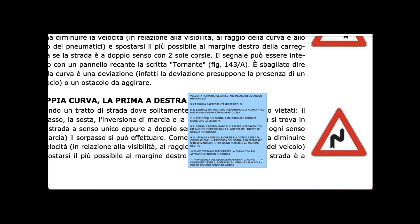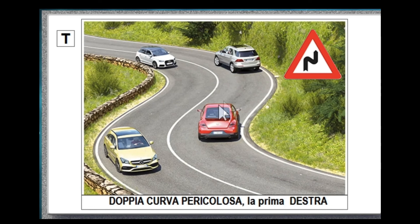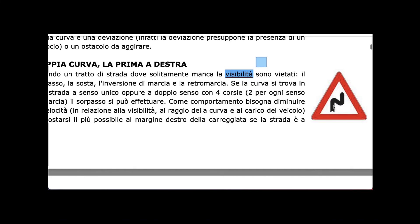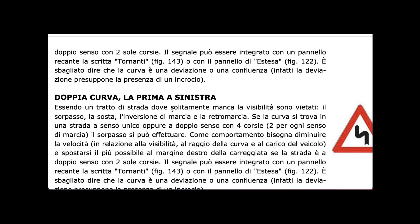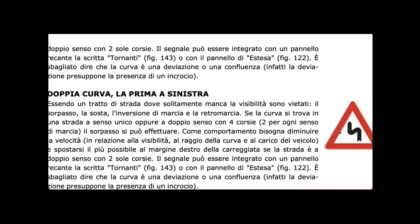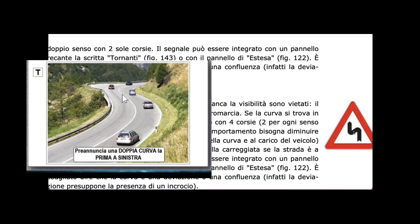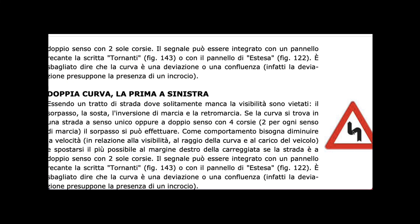When this sign is present on a two-lane road with two-way traffic, overtaking — 'il sorpasso' — is not allowed, because it causes accidents. If it is not 'doppia curva la prima a destra', then we have 'doppia curva la prima a sinistra' — double curves with the first one to the left.